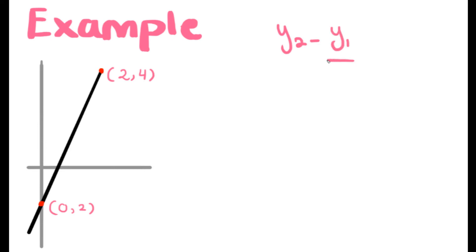An example is (0,2) and (2,4), which is y2 minus y1 over x2 minus x1. That ends up being 4 minus 2 over 2 minus 0, which goes to 2 over 2, that is equal to 1.